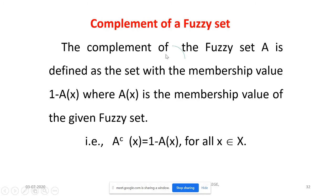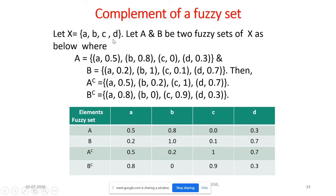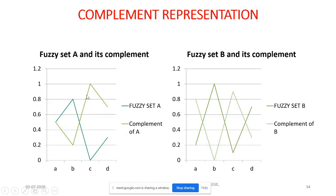Complement of a fuzzy set A: the complement A' is defined by A'(x) = 1 − A(x) for all x ∈ X. For example, with X = {a, b, c, d} and given membership values for A and B, we compute A'(x) = 1 − A(x) and B'(x) = 1 − B(x). Graphically, the first diagram shows fuzzy set A and its complement, and the second shows fuzzy set B and its complement.